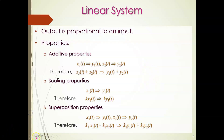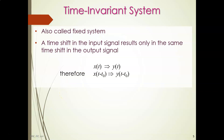Next is the time-invariant system. A system is said to be time-invariant if the behavior and characteristics of the system are fixed over time — that is why it is also called a fixed system. A time shift in the input signal results only in the same time shift in the output signal. If y(t) is the output for input s(t), then a time shift of t-naught in the input results in the same shift t-naught at the output. If a system does not follow these properties, it is called a time-varying system.